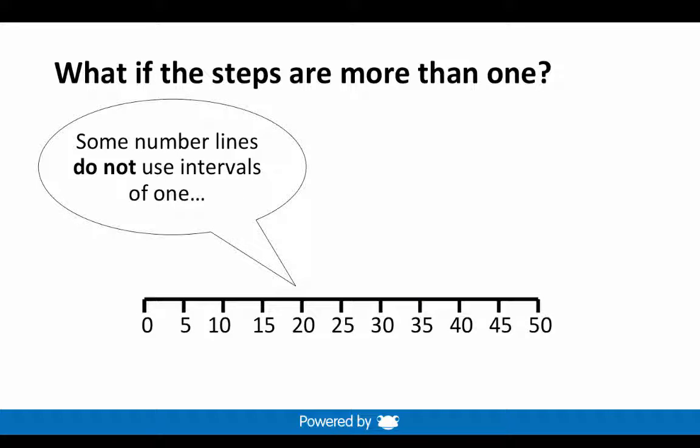Some number lines do not use intervals of 1. Have a look at this example. What is happening to the numbers on the line? Can you work out the interval or jump between each one? Let's read it together.